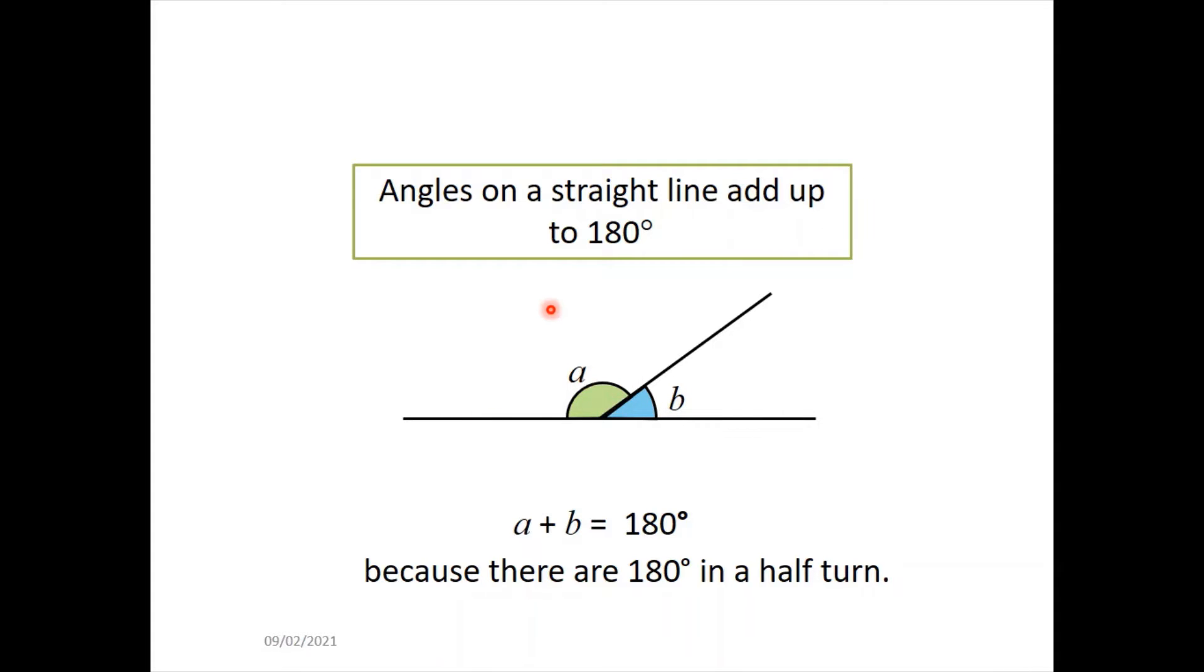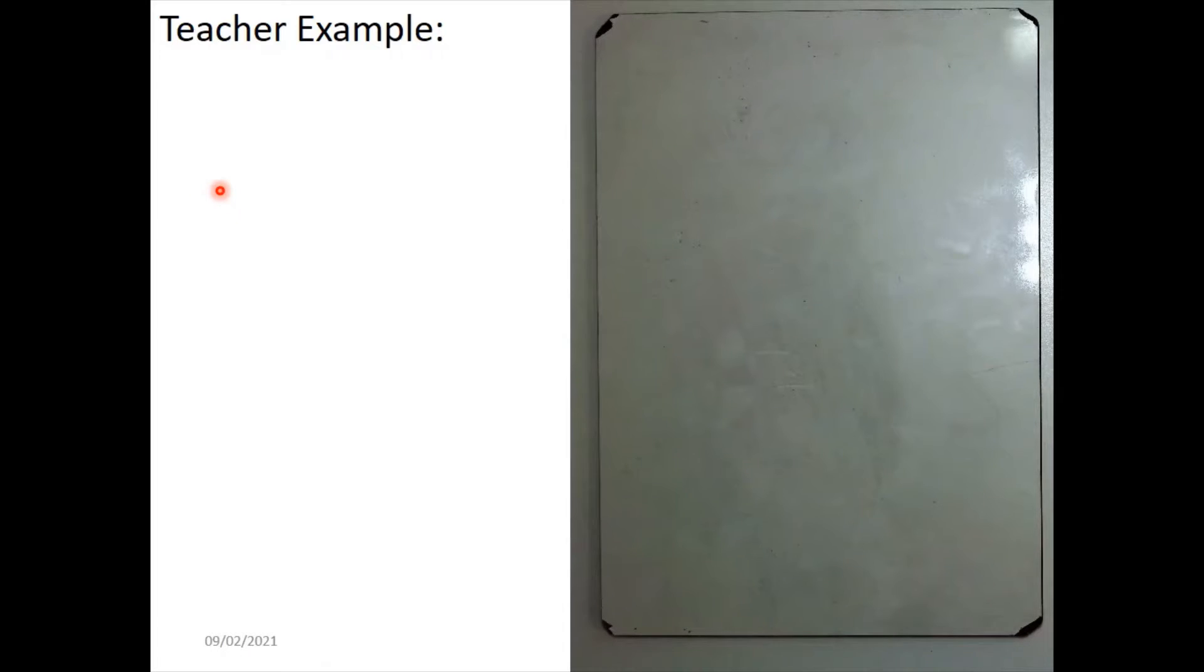So the important thing here is that 180 degrees is a straight line and any angles on this straight line over here, these two added together would be equal to 180. So this is angle A, add angle B is equal to 180. So this is a very crucial formula and I want you to make sure you've copied this down.